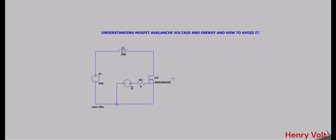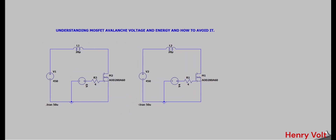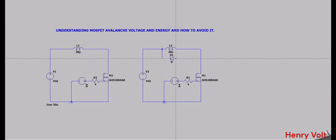Now, how do we save this MOSFET? The problem is the inductor energy dumping into the MOSFET. We need to divert this inductor energy somewhere else, or make a closed loop so the inductor energy keeps circulating within itself. One solution is to place a freewheeling diode. I will copy this whole circuit and place a diode — making sure the diode direction is correct so it conducts only when the switch is turned off.